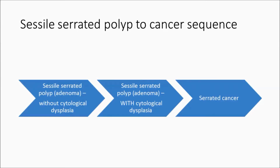The serrated class of colorectal polyps includes the sessile serrated polyps, the traditional serrated adenomas, and the hyperplastic polyps. Hyperplastic polyps are not considered precancerous, and traditional serrated adenomas are relatively rare left-sided lesions that are precancerous, but because they're infrequent compared to the sessile serrated polyps, the sessile serrated polyps are the major group of precancerous lesions within the serrated class.